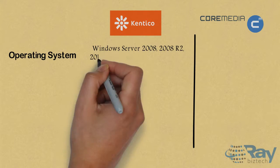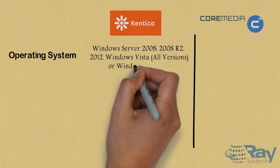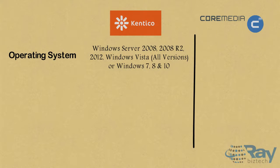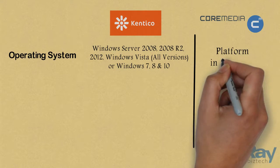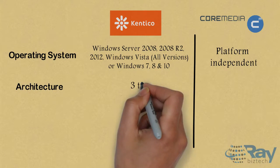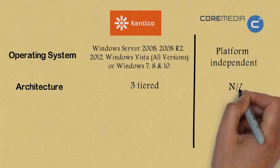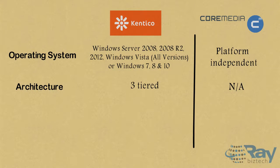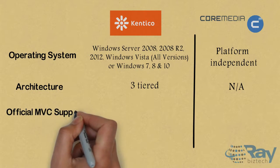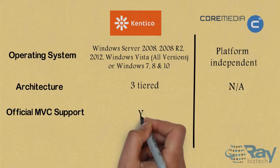Operating System for Kentico: Windows Server 2008, 2008 R2, 2012, Windows Vista all versions, or Windows 7. Core Media: Platform Independent. Architecture for Kentico: 3-Tier. Architecture for Core Media: Not Available.